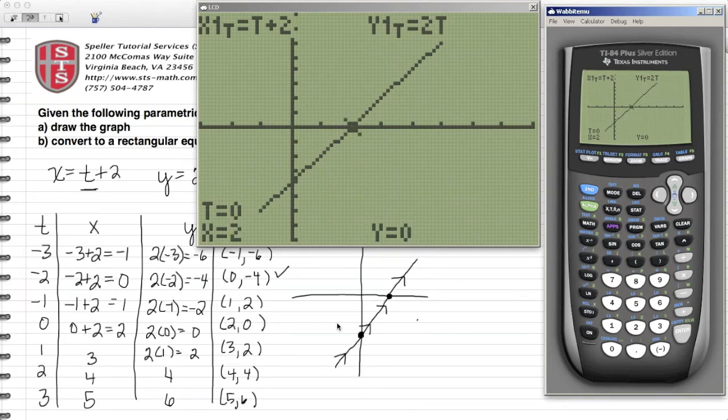At time 0, we are correct again at position 2, 0. When T equals 1, we're at 3, 2. When T is at 2, we're at position 4, 4. And when T is at position 3, we're at coordinate 5, 6. That mirrors exactly what our hand calculations were.